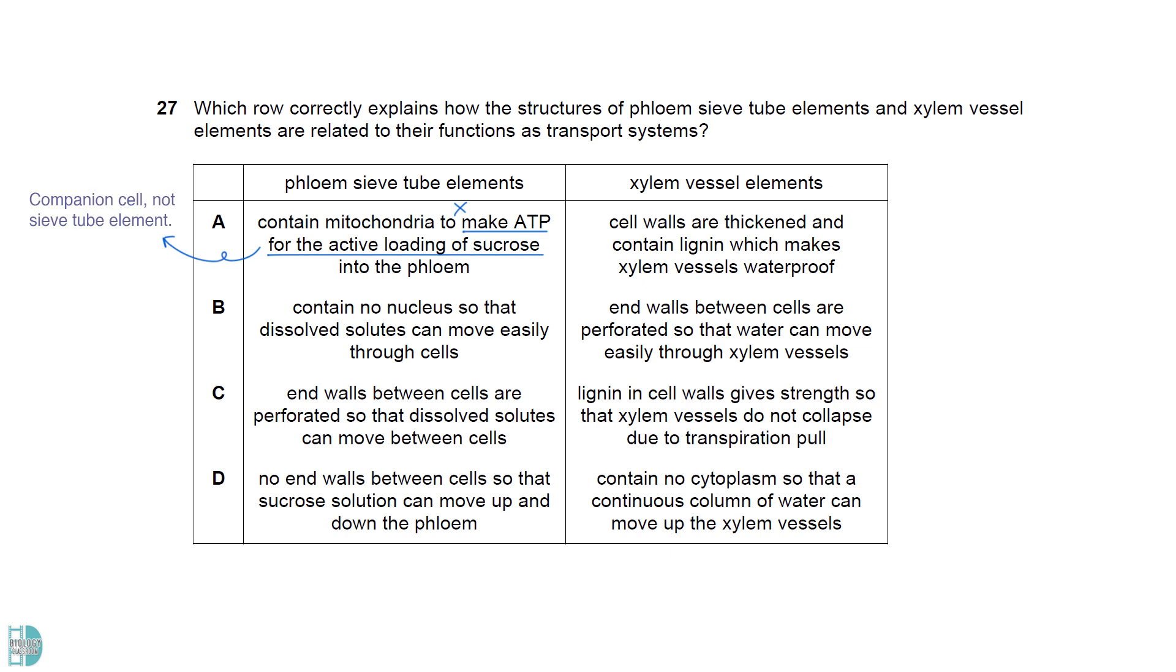A is wrong as the ATP required for the active loading of sucrose is made by the companion cells, not the sieve tube elements. B is incorrect as the xylem vessels have no end walls. C is correct for both cells. D is wrong as sieve tube elements do contain perforated end walls.